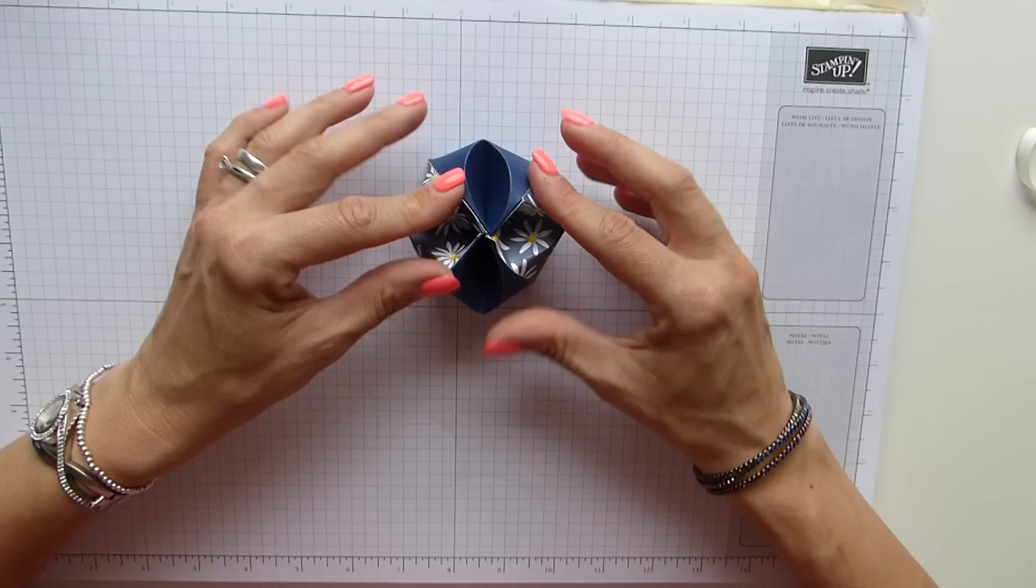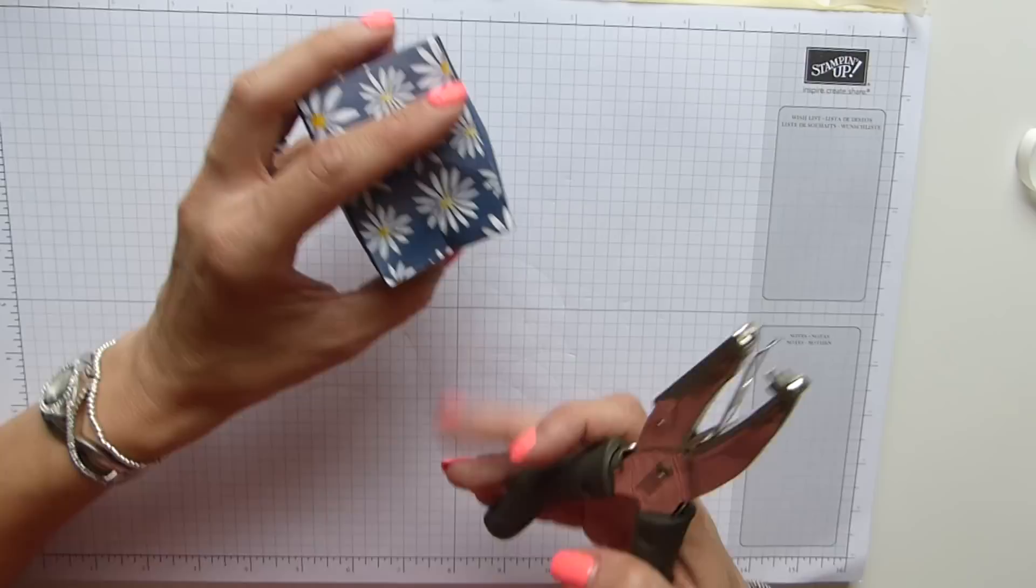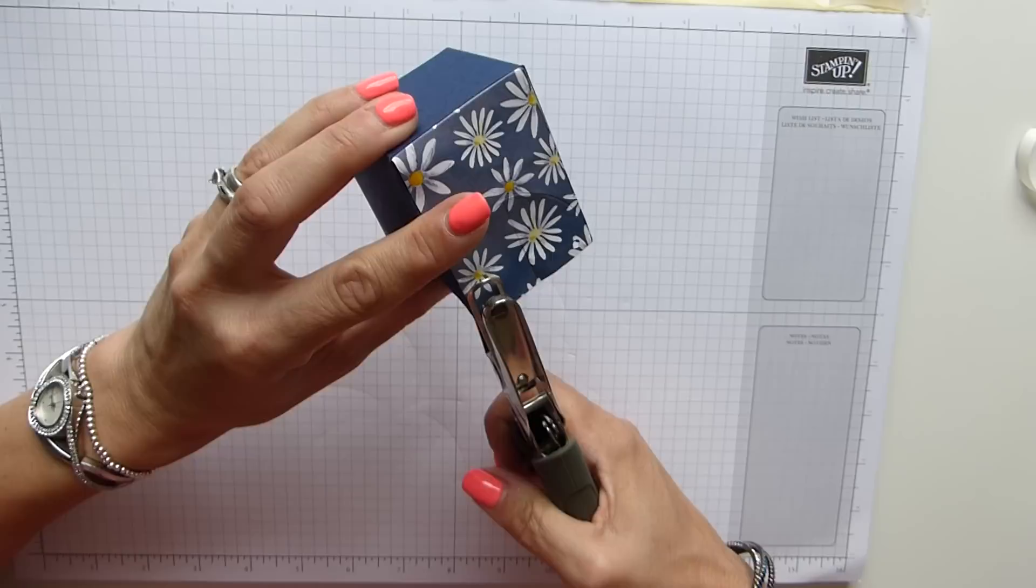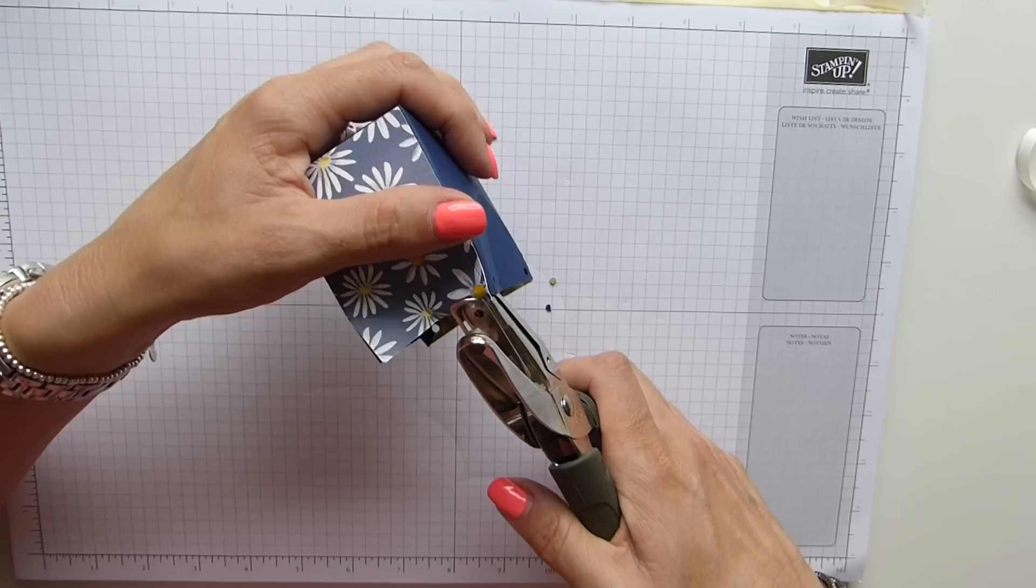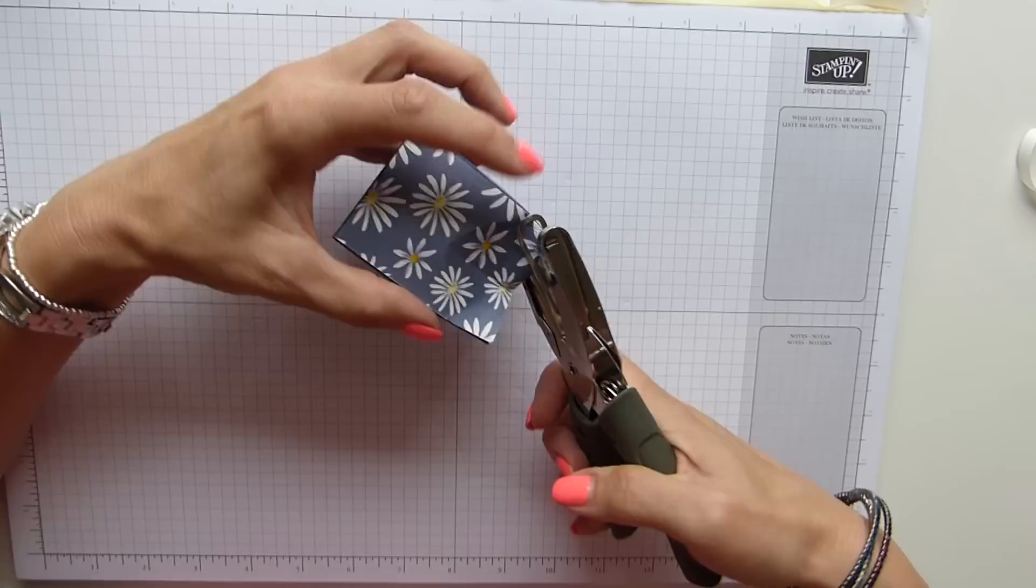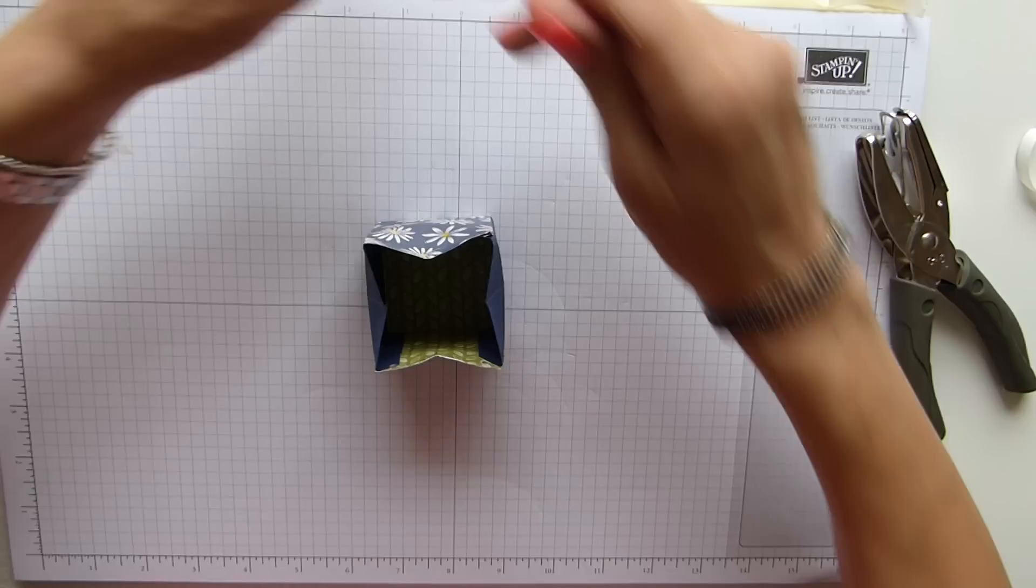And then all that's left to do now is to grab your handheld punch. And you simply go along and just punch the corners, if you like, where the DSP and the cardstock meet. And this one, unfortunately, does look a little bit tatty because of me creasing that DSP when I was folding it, which is annoying. So you've pinched, pinched, punched your holes.